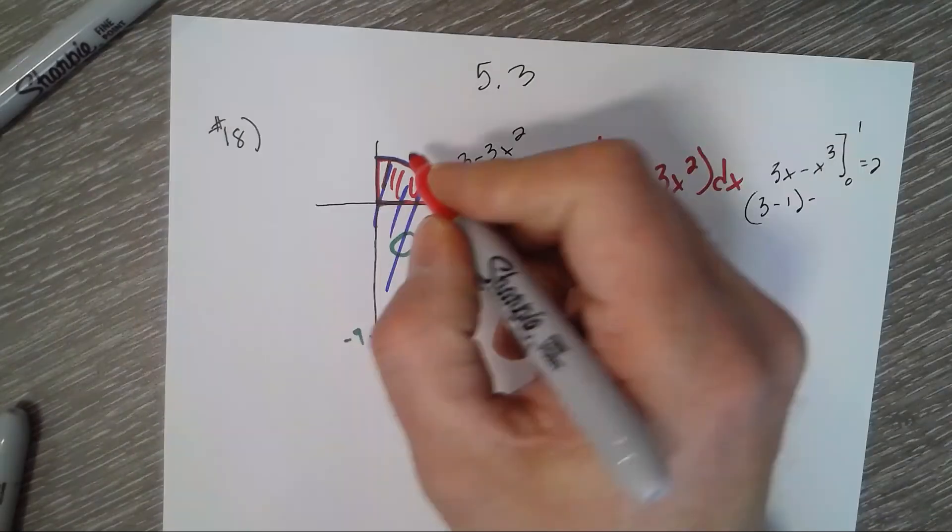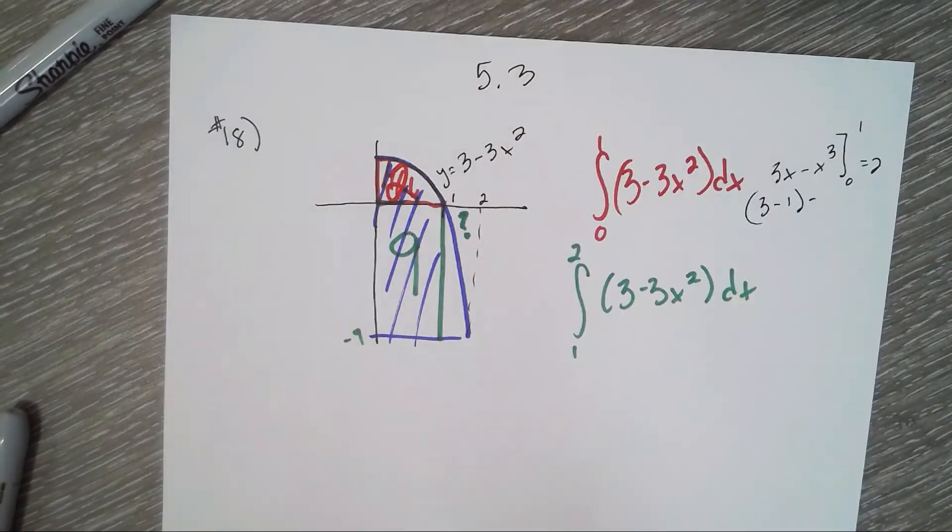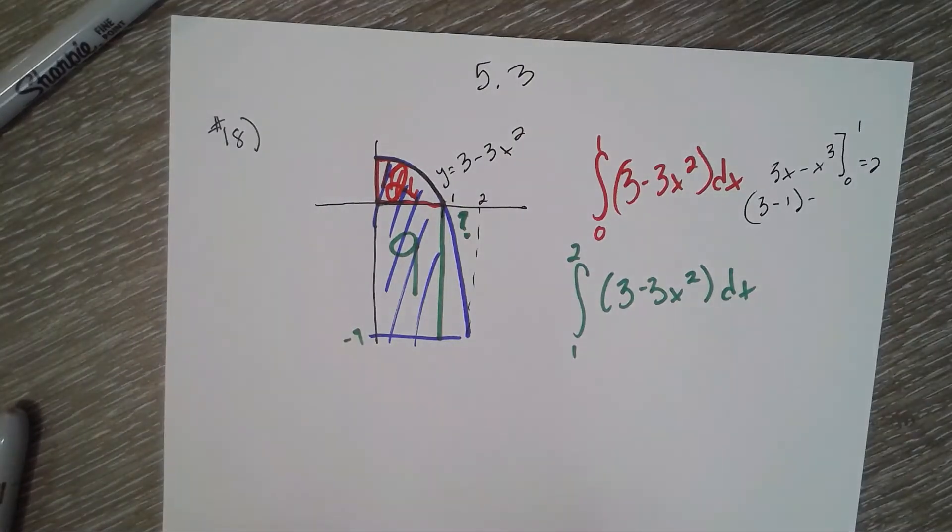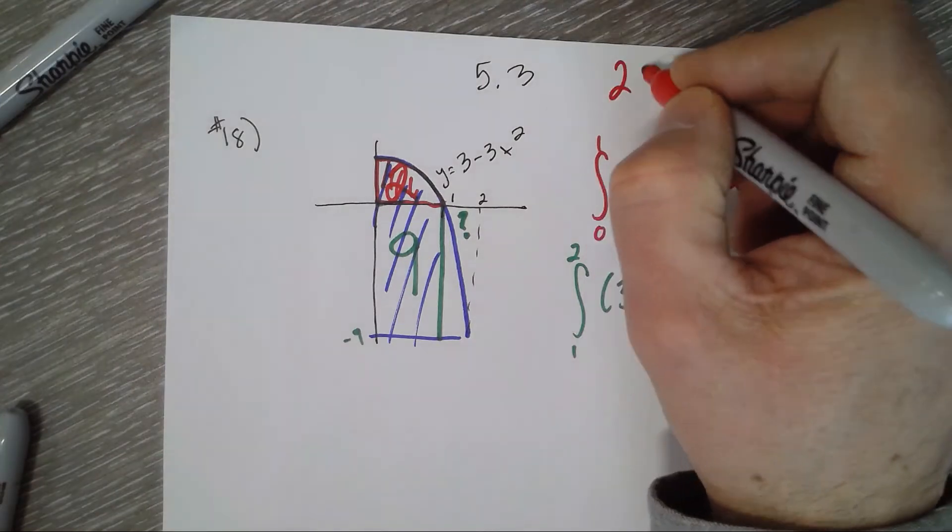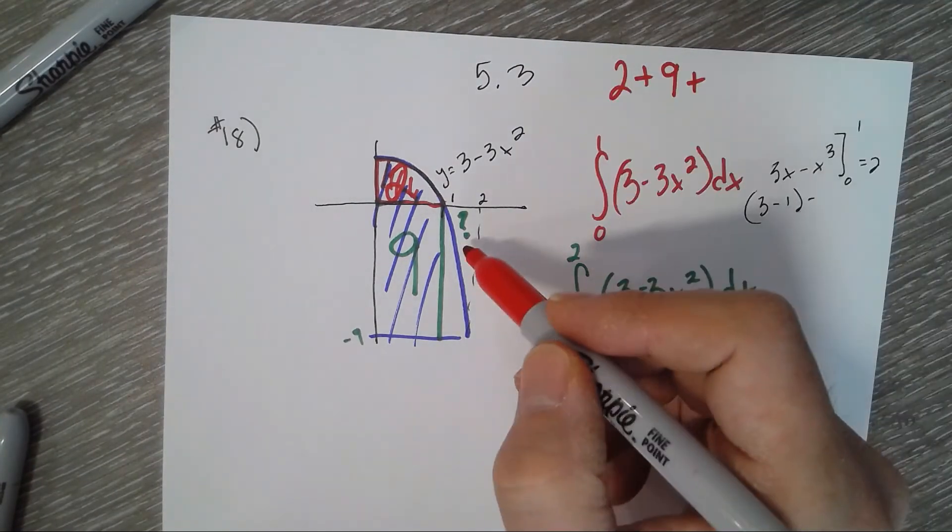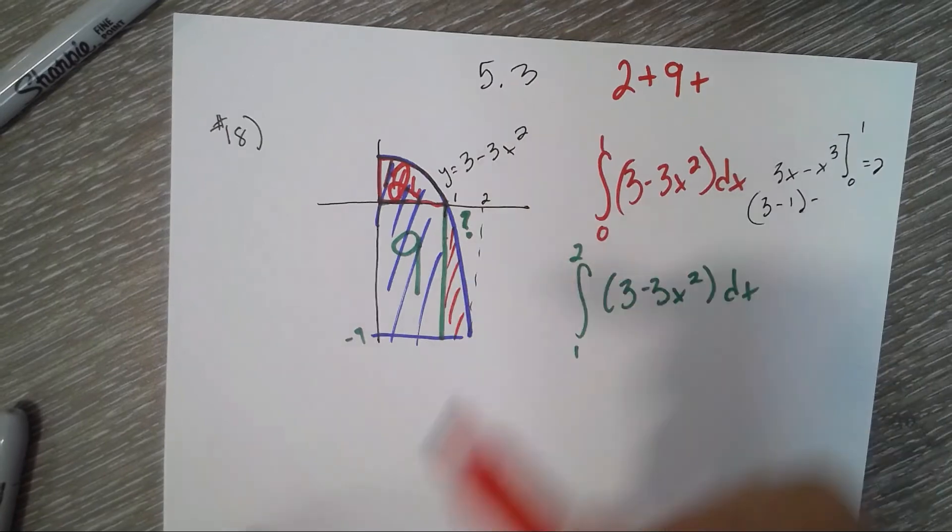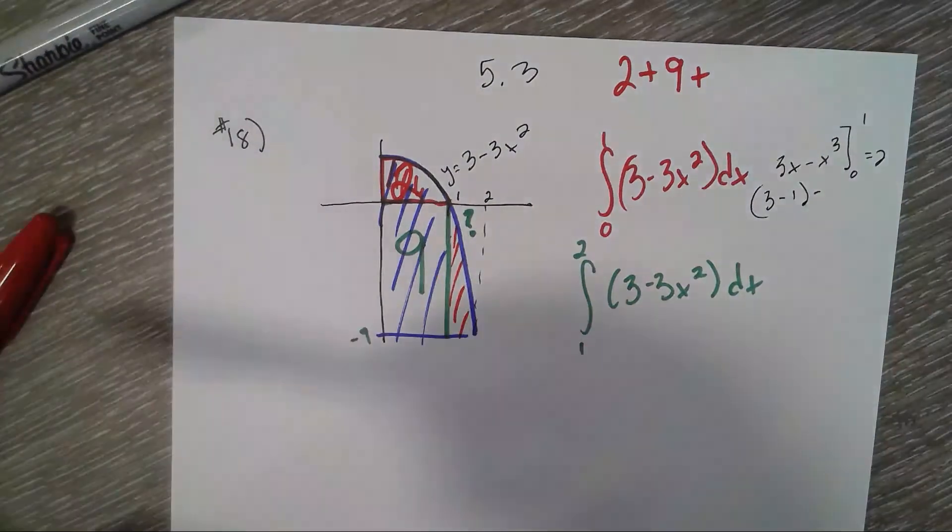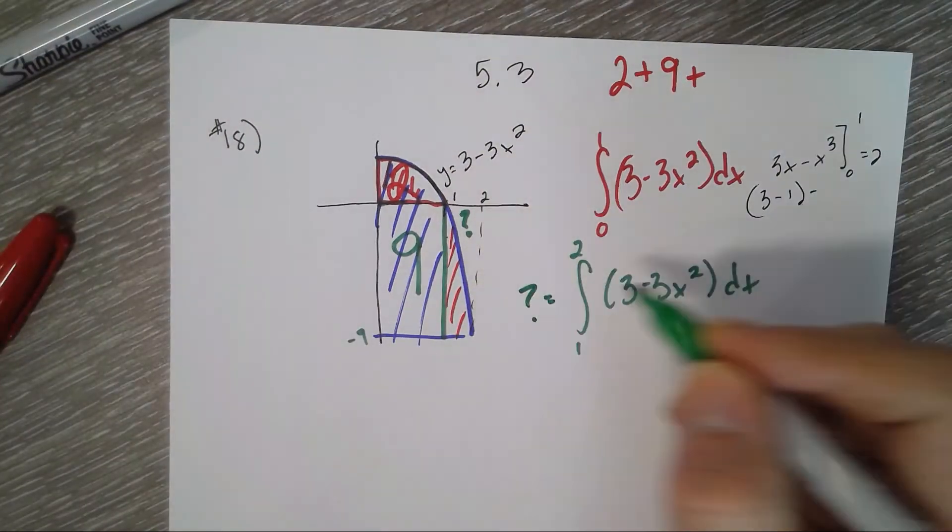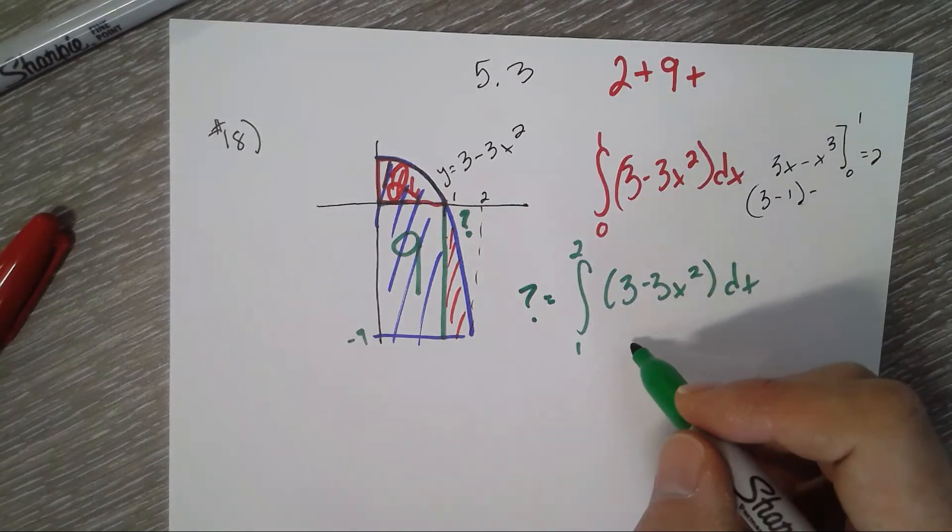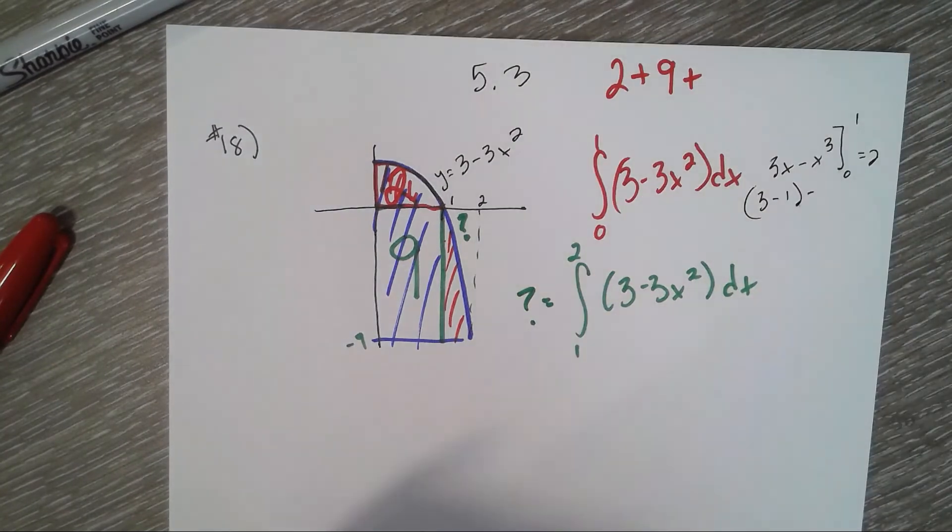You can barely tell, all right. So we have 2 plus 9 plus one more area right here. But first we'll find the question mark area. That's still 3x minus x cubed, now from 1 to 2.